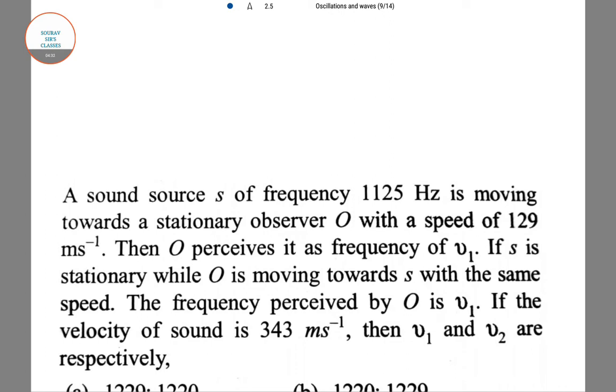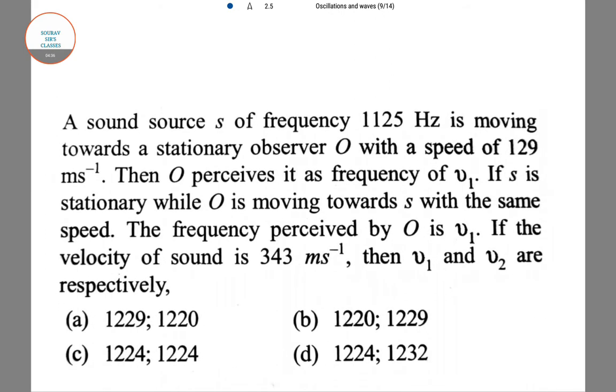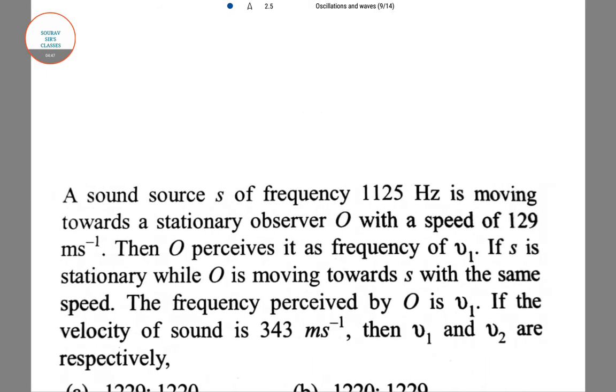Next, the sound source of frequency 1125 Hz is moving towards a stationary observer. This also uses a similar formula. Here we can write ν1 = V/(V - Vs) and ν2 = (V + V0)/V.